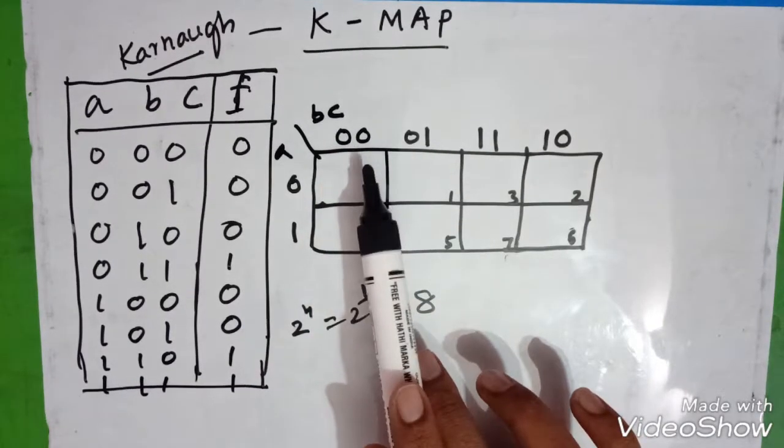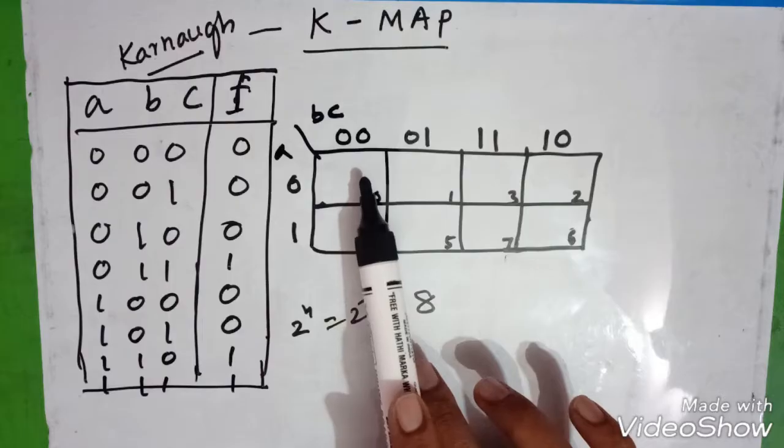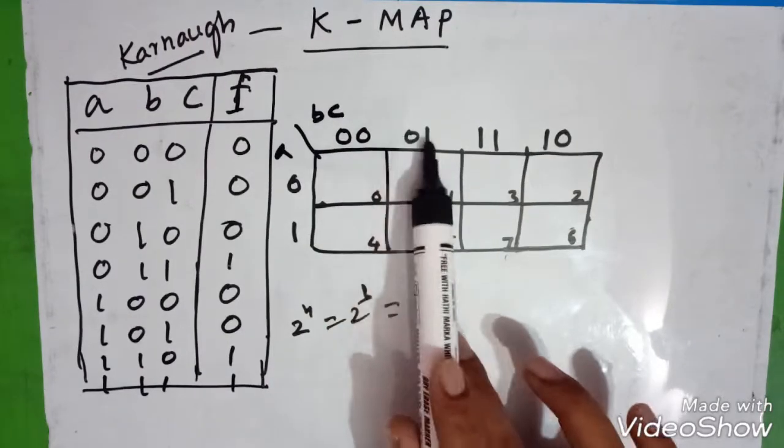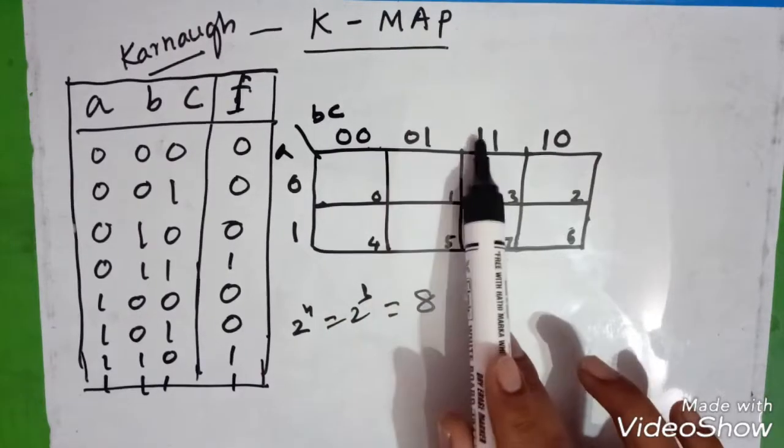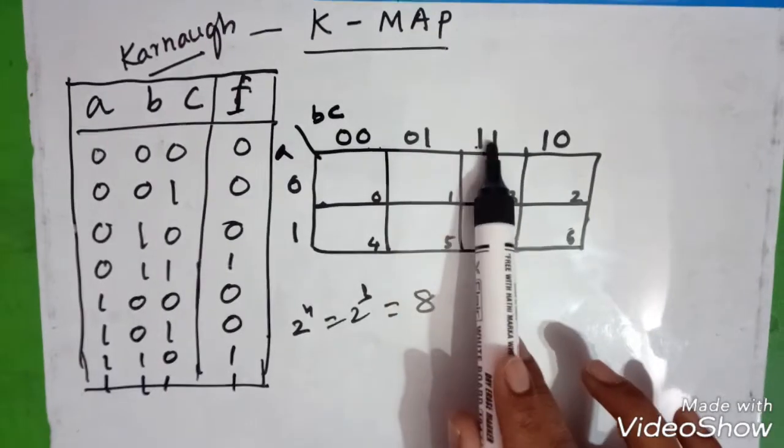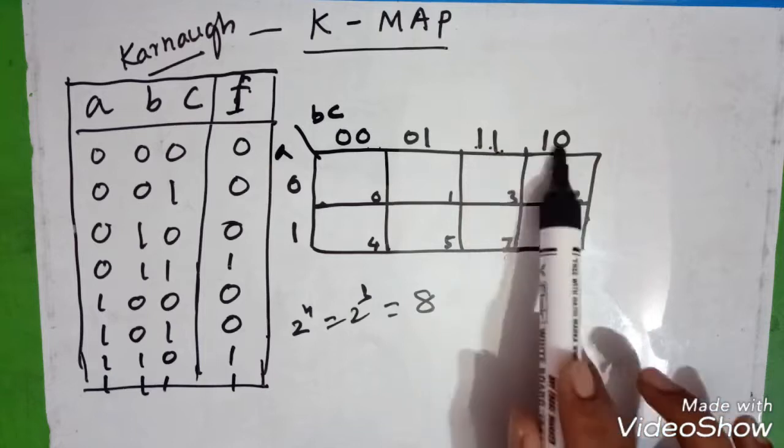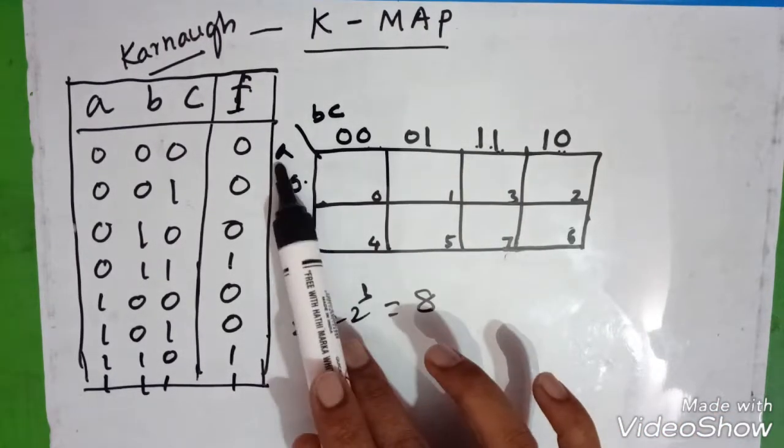We have to select such a number, a term which should be differed only in one literal. You can see 00, it is 01, this one is changing. Then again 01, it is 11. Then again 11, it is 10. This variable is changing. This is zero and this is one. This is bc.